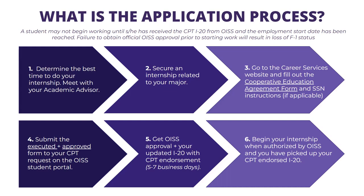Fourth, submit the signed and approved form to your CPT request on the OISS student portal. Once you submit your Cooperative Education Agreement on the Career Services website and download the PDF, this is not yet your final version since all parties have not signed it yet. You must wait to receive all approvals and all signatures, then upload the final document on your OISS portal. Your final step is to submit everything on your CPT request on the OISS portal, get approval, and receive your updated I-20 with CPT endorsement. You will receive this endorsement within five to seven business days and an email from our office once your CPT I-20 is ready for pickup at the Center for Global Engagement. Begin your internship when you're authorized to do so and you have picked up your CPT endorsed I-20.